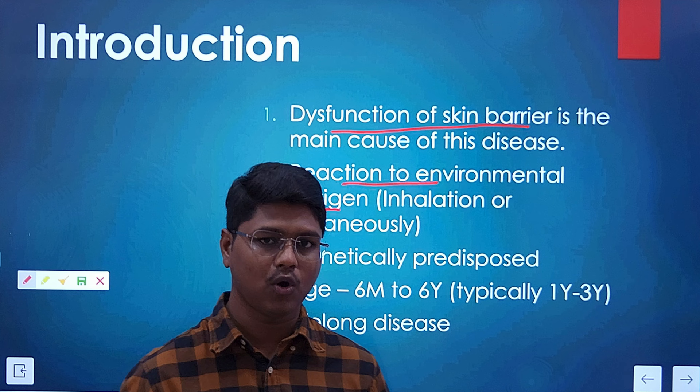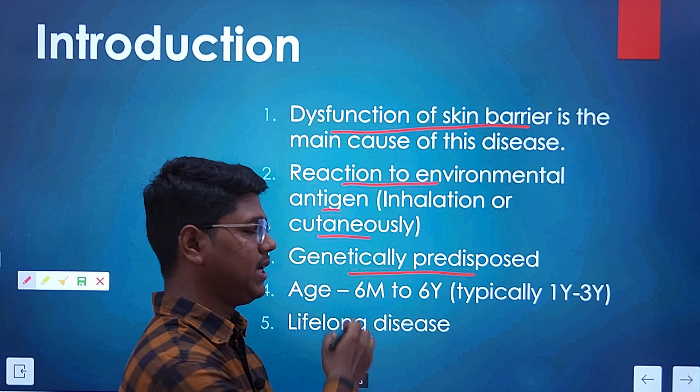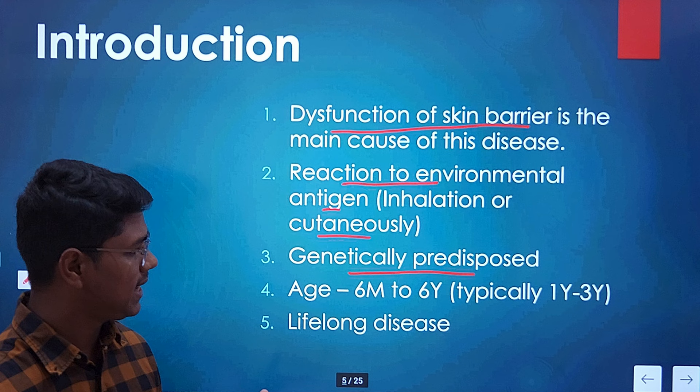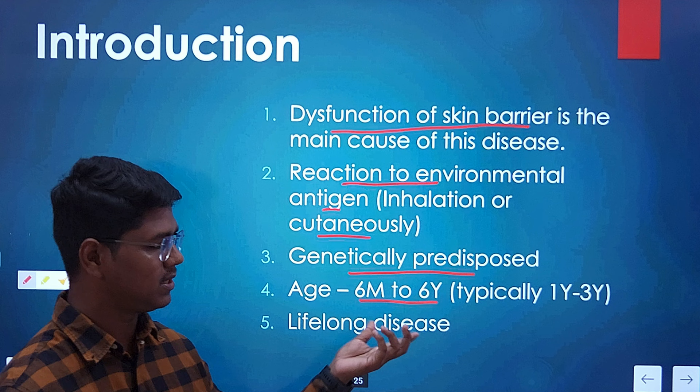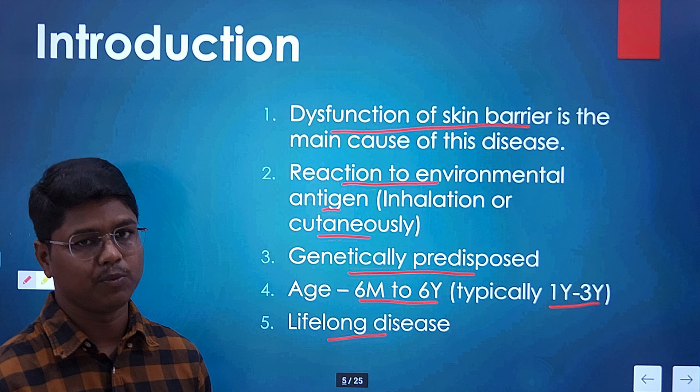The antigen may enter the body by inhalation or adhere to the skin cutaneously. Many breeds are genetically predisposed — the book suggests that if a dog's parents had atopic dermatitis, the offspring is likely predisposed. The common age of onset is six months to six years, but most typically you will find this disease in adults between one and three years of age. It is a lifelong disease and the animal may need medication for its entire life.